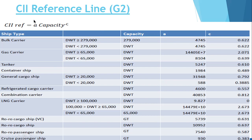Now, what is G2? G2 talks about the reference line. The CII reference is calculated based on values given by IMO for different vessel types. The formula is: CII reference = A × capacity to the power of minus C. For a bulk carrier with dead weight greater than 279,000, the value of A is 4745 and C is 6.622. But if your bulk carrier is less than 279,000, you take a different value.